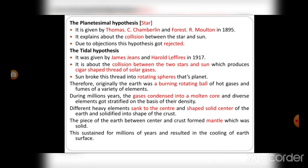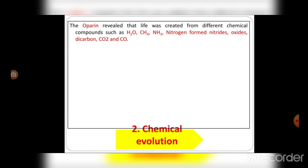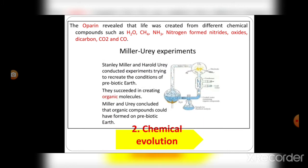Next is chemical evolution. The scientist Oparin revealed that life was created from different chemical compounds such as water, methane, nitrogen hydroxide, nitrogen that formed nitrates and oxides, carbon dioxide, and ammonia.